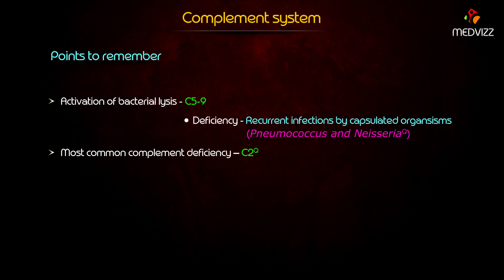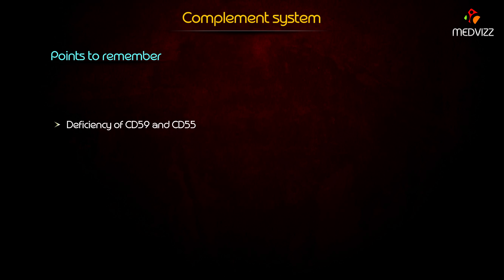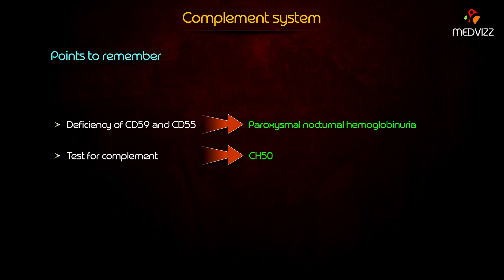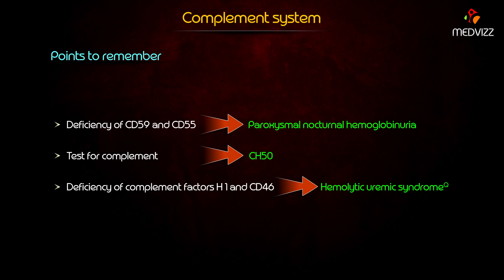The most common complement deficiency is C2. C5a is responsible for chemotaxis and activates the lipoxygenase pathway. Deficiency of CD59 and CD55 can cause paroxysmal nocturnal hemoglobinuria. The test for complement is CH50.